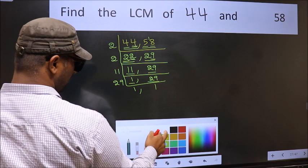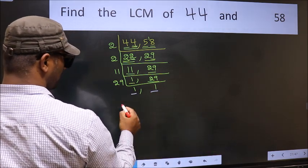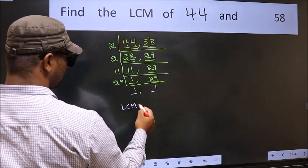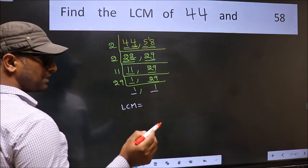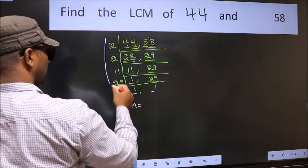So we got 1 in both places. So our LCM is the product of these numbers.